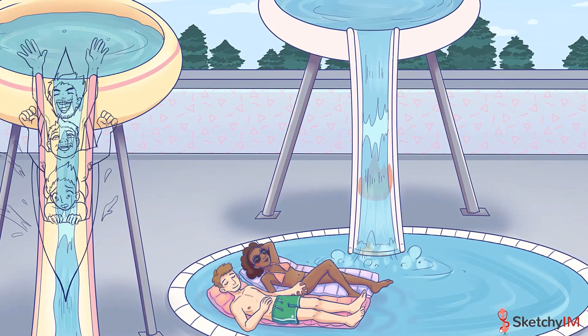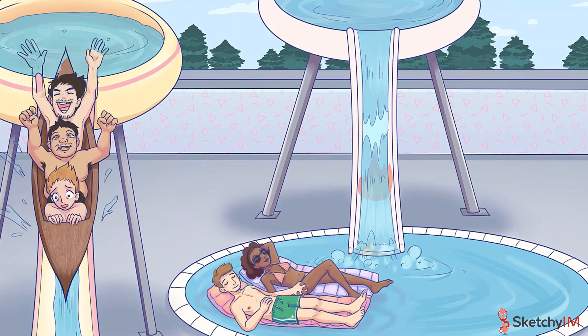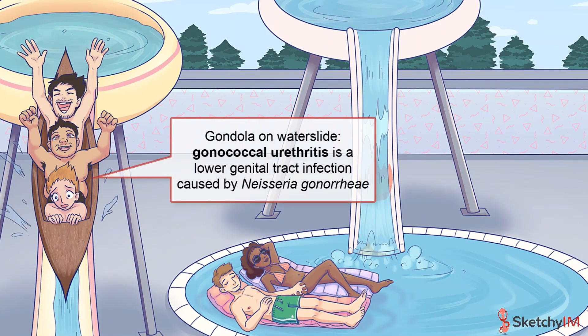Let's start by going over gonococcal urethritis, which is caused by Neisseria gonorrhea — a gram-negative diplococci. Gonorrhea can cause upper and lower genital tract infection in males and females, and can also rarely cause disseminated disease, called disseminated gonococcal infection, or DGI. DGI can lead to bacteremia, septic arthritis, endocarditis, and meningitis.